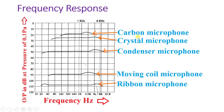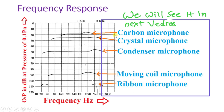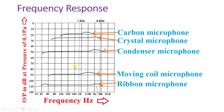You can see frequency response graphs of different microphones, which I will be explaining in future sessions. Those include carbon microphone, crystal microphone, condenser microphone, moving coil microphone, and ribbon microphone. We will study all of these in detail in future sessions.